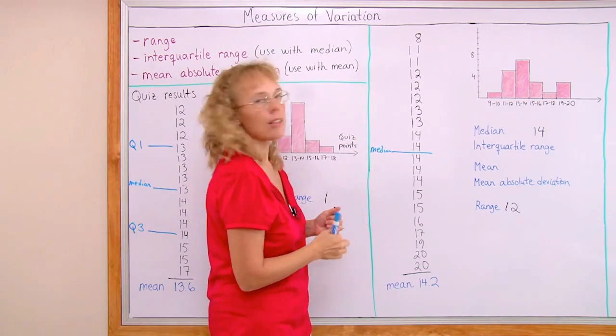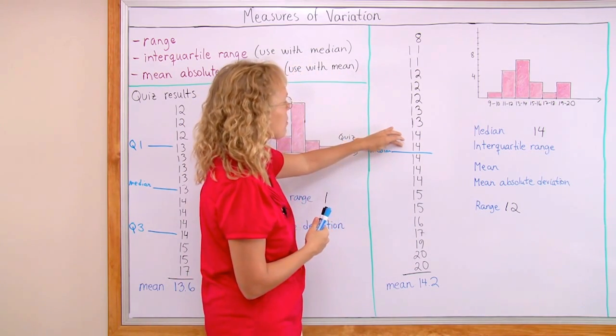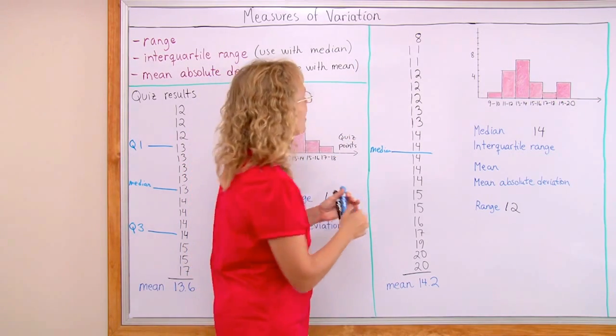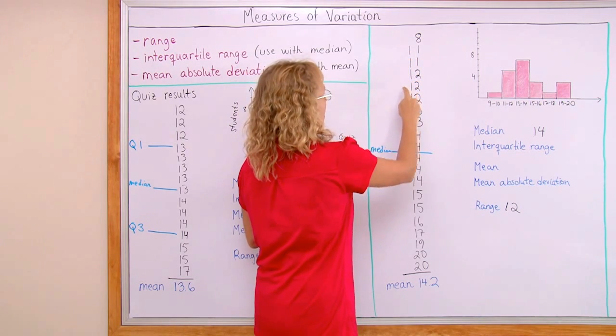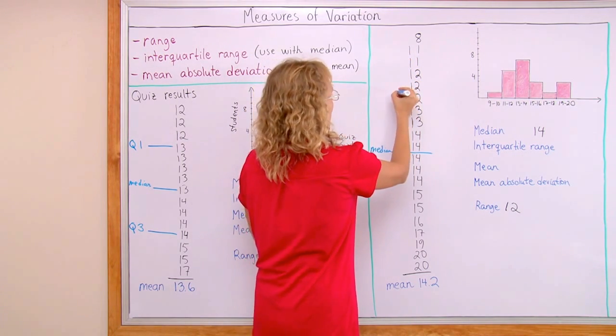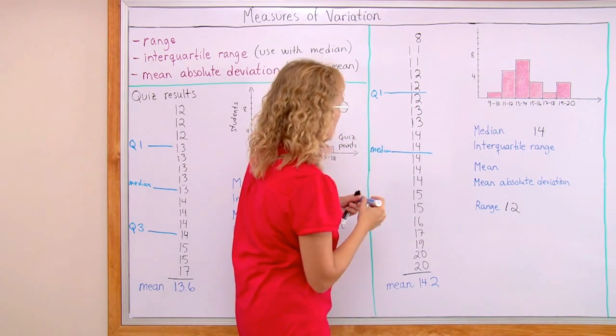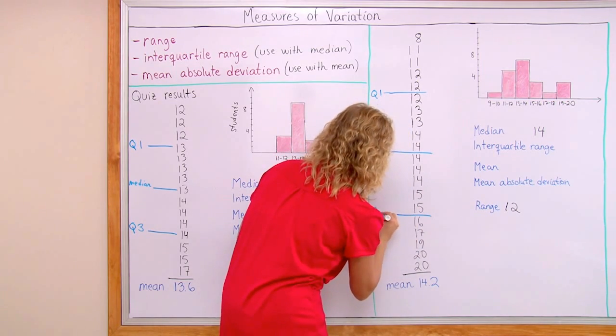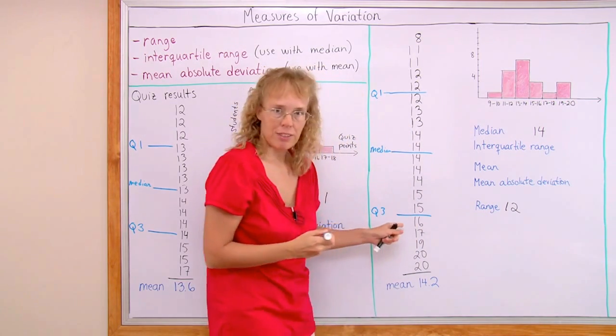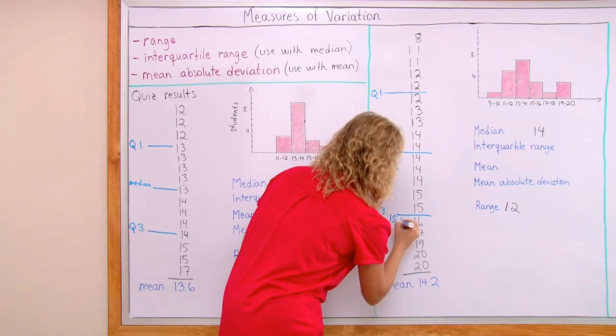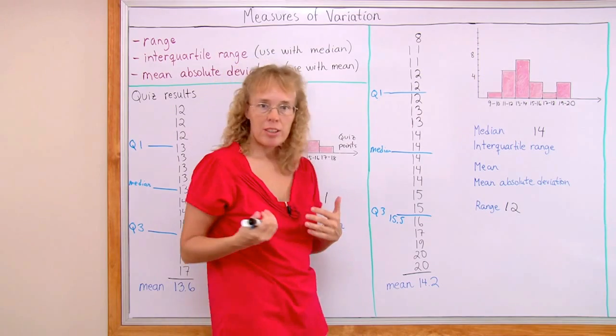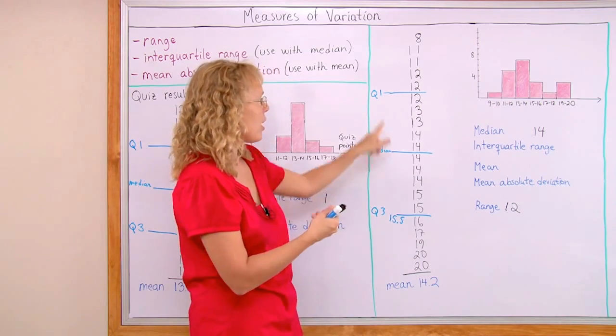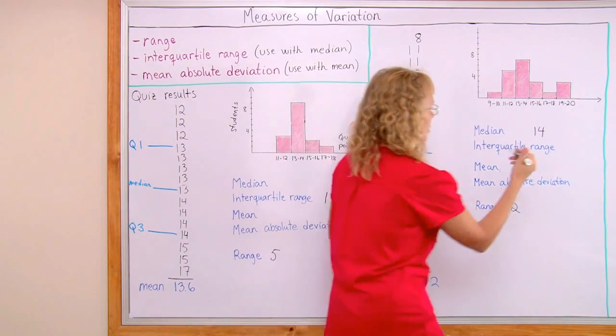And then the first quartile. Here I have 10. Here I have 10 items. And so it will be the average of the 5th and 6th item. 5 and 6. It's 12 here. It's 12 in here. This one would be 15.5. Like that. And now the interquartile range would be the difference between these two. 15.5 and 12. So we get 3.5.